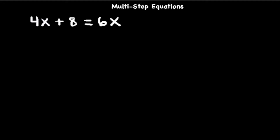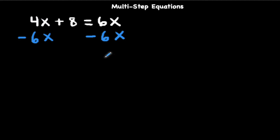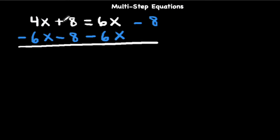So let's go ahead and do some moving around. I would like to get the variable on the left side of the equation, so I need to undo addition by subtracting. So minus 6x on the right side as well as on the left side. Now let's move the numbers to the other side — we have plus 8, so we subtract 8 on the other side as well. Positive 8 minus 8 cancels out, and 6x minus 6x cancels. So we're left with 4x minus 6x, which is negative 2x, equals negative 8.